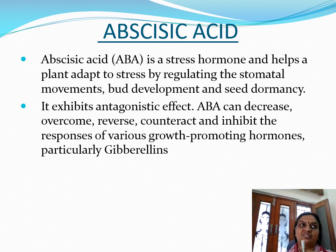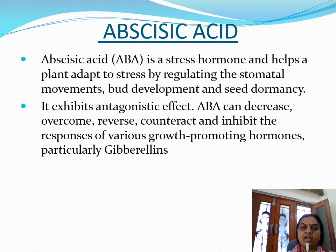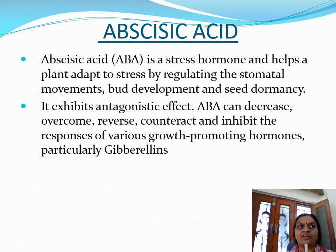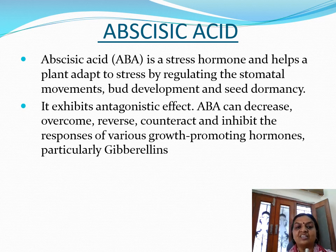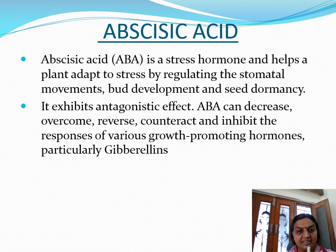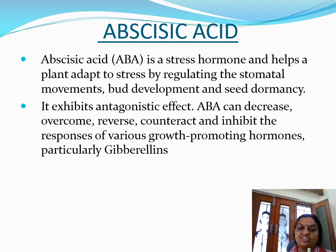Now, about the second growth regulator whose bioassay we are going to deal with today — it is abscisic acid. Abscisic acid is a major stress hormone that helps the plant adapt to different stresses by regulating physiological phenomena like stomatal movements, bud development, seed dormancy, or bud dormancy. Abscisic acid also exhibits an antagonistic effect to various other plant growth regulators, particularly gibberellin. So abscisic acid can decrease, overcome, reverse, counteract, and inhibit the response of various growth-promoting hormones — hence it is the growth-retarding hormone.